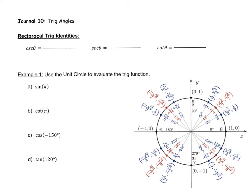In this video, we're going to be looking at trig angles, and we'll start with reciprocal trig identities. We've talked about these before, but in this case we're going to show you another way to interpret cosecant, secant, and cotangent. For cosecant, we've talked about it being the reciprocal of sine, and one way to write this is as one over sine theta. Cosecant looks like one over y, where y is the unit circle value connected to sine.